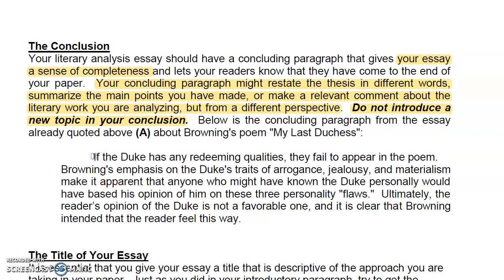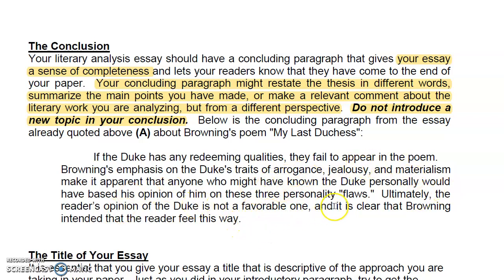Here's a standard example conclusion — again about 'My Last Duchess,' not one of our stories: 'If the Duke has any redeeming qualities, they fail to appear in the poem. Browning's emphasis on the Duke's traits of arrogance, jealousy, and materialism make it apparent that anyone who might have known the Duke personally would have based his opinion on these three personality flaws. Ultimately, the reader's opinion of the Duke is not a favorable one, and it is clear that Browning intended the reader to feel this way.'